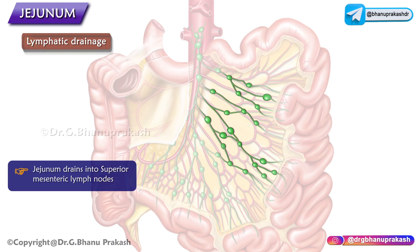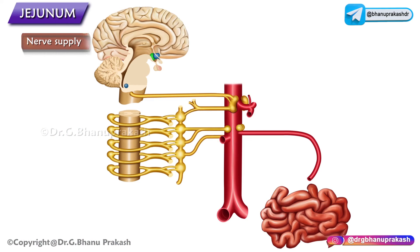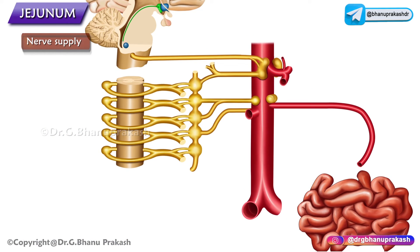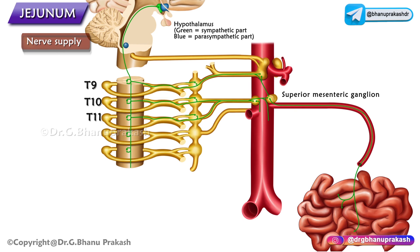Lymphatic drainage drains into the superior mesenteric lymph nodes. The sympathetic nerve supply is from T9 to T11 segments, and the parasympathetic nerve supply is from the vagus nerve, mainly by the posterior vagal trunk.